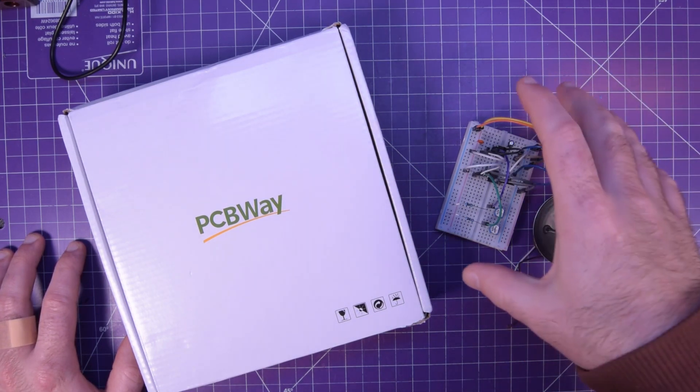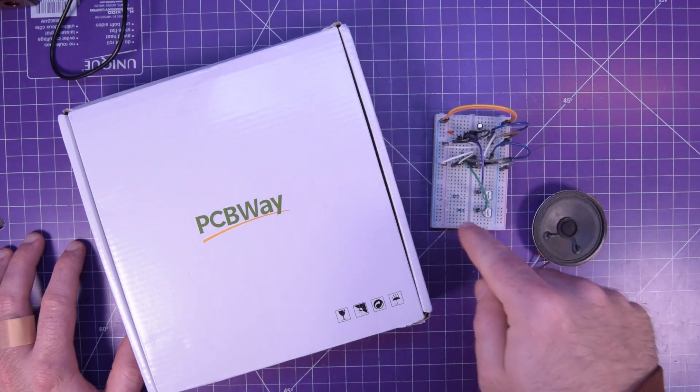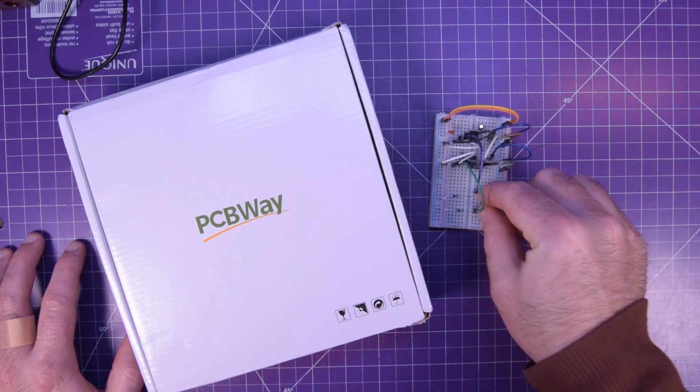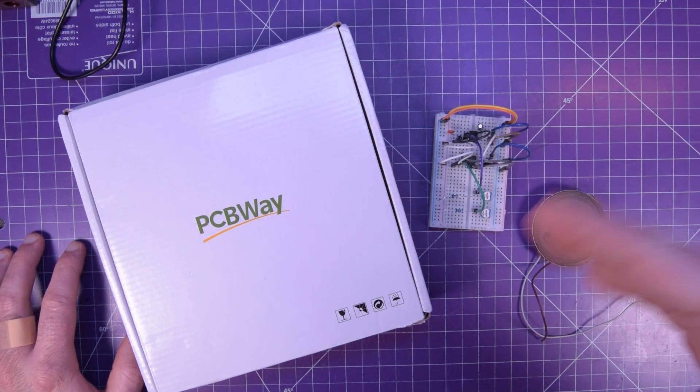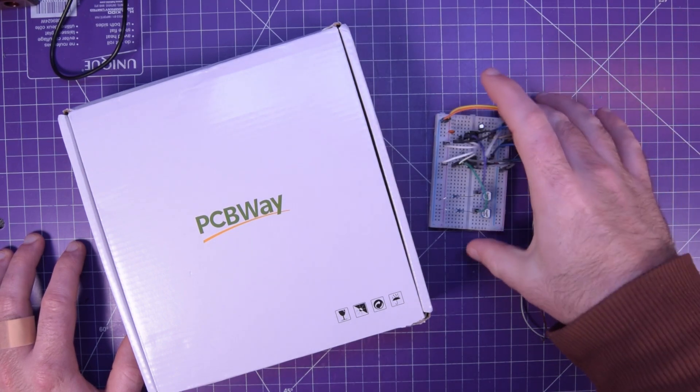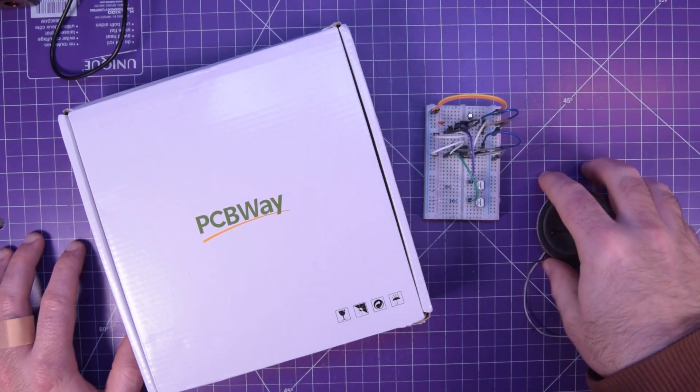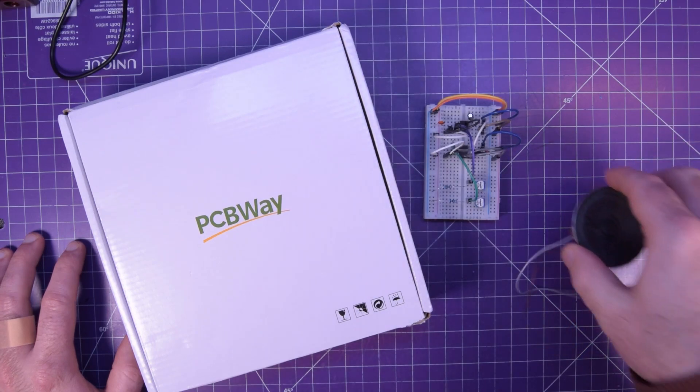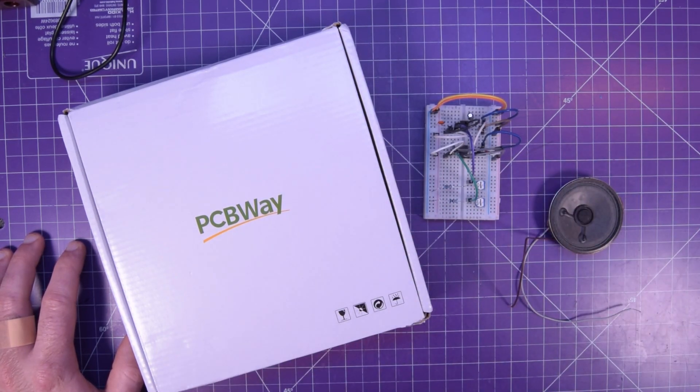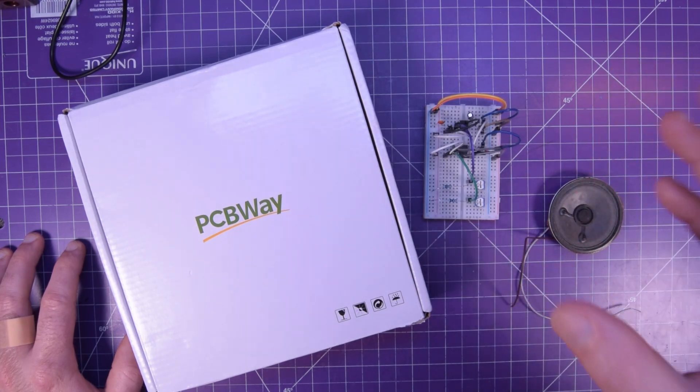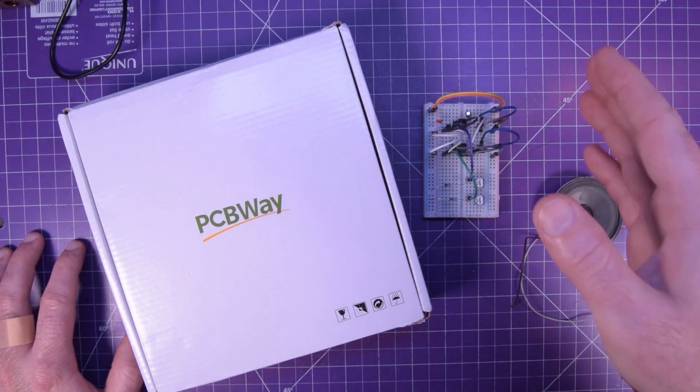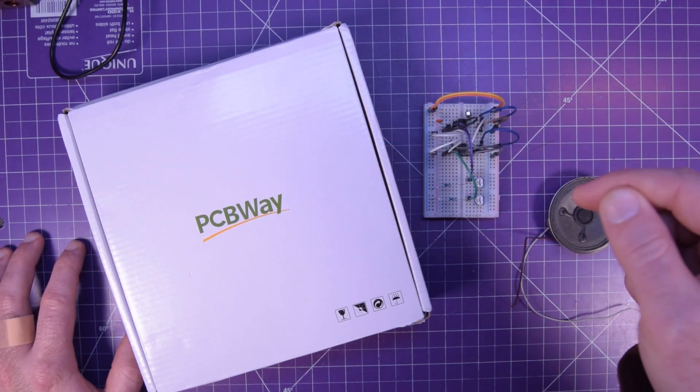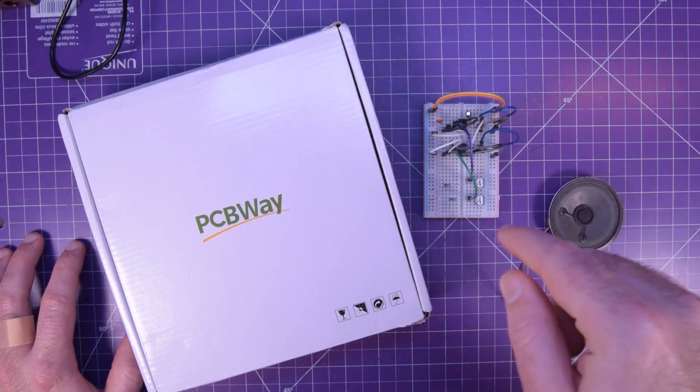So all you really need is the 555 timers, a couple resistors, a couple potentiometers, a couple capacitors, and a breadboard, and a speaker, and you can make it work. It seemed like there was about 40 different variations of this circuit, so it seems like no matter what kind of components you have in your junk bin, you can make it work for yourself too.